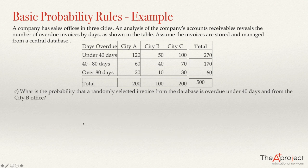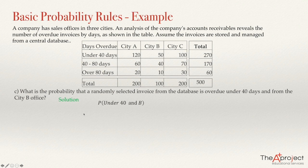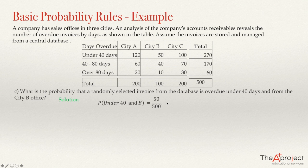What is the probability that a randomly selected invoice from the database is overdue under 40 days and at the same time from the CDB? We need the invoices that are in the first row — under 40 days — and in the CDB column. Those are 50 invoices. So the answer is 50 over 500, which equals 0.10 or 10%.